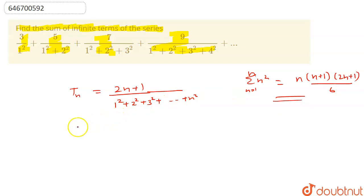So it will become Tn equals 2n plus 1 upon n into n plus 1 into 2n plus 1 upon 6. So here 2n plus 1 will cancel out and Tn will be equals to 6 upon n into n plus 1.